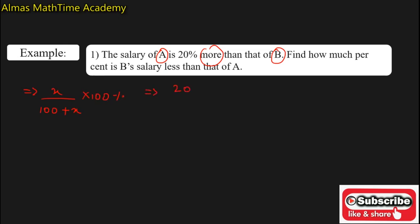Now substitute that one: 20 upon 100 plus 20 into 100 percent. Now solve this one. Here it will become 20 upon 120 into 100 percent. Now cancel the terms: 0, 0, 2, 1 times 2, 6 times, then 3 times 50 times.